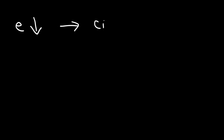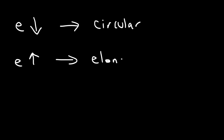Keep this in mind: if the eccentricity decreases, the ellipse becomes more circular. If the eccentricity increases, the ellipse becomes more elongated and has a more oval shape. Remember, the eccentricity describes the shape of an ellipse.